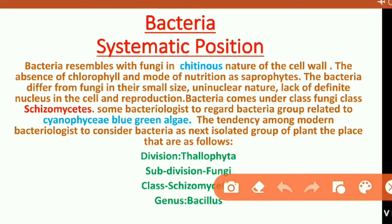Bacteria share some characters with algae and some characters with fungi. Bacteria resembles with fungi in the chitinous structure of the cell wall — just as fungi have cell walls made of chitin. Another fungal character is the absence of chlorophyll. Also, their nutrition is saprophytic in nature, meaning they obtain their food and nutrition from dead and decaying organisms.